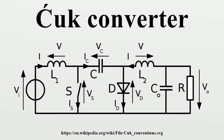The Ćuk converter is a type of DC-DC converter that has an output voltage magnitude that is either greater than or less than the input voltage magnitude. It is essentially a boost converter followed by a buck converter with a capacitor to couple the energy. The non-isolated Ćuk converter can only have opposite polarity between input and output. It uses a capacitor as its main energy storage component, unlike most other types of converters which use an inductor. It is named after Slobodan Ćuk of the California Institute of Technology, who first presented the design.